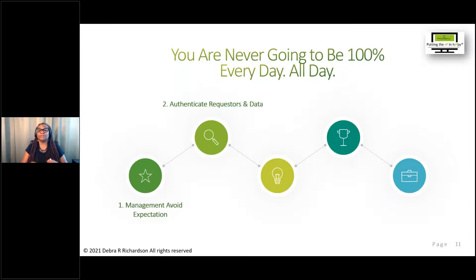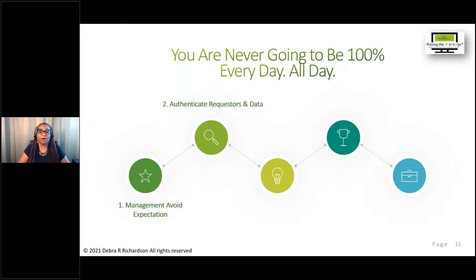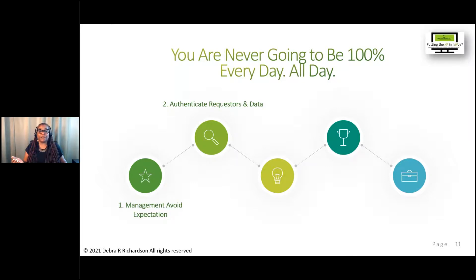For internal employees — even if they email from a company work address — their email could have been hacked, and a fraudster could have removed the external email indicator. Ask them something like their cubicle or office number and maybe the next two levels up on their hierarchy. Then authenticate data: if they're making a banking change, require the existing banking information. If you get pushback, wonder whether someone who can't provide the existing vendor banking data really has the authority to change it.